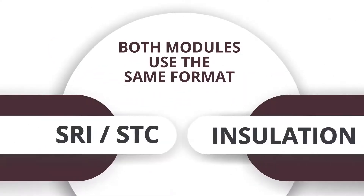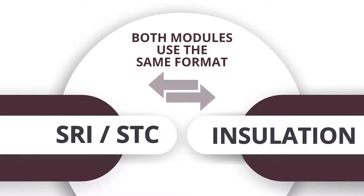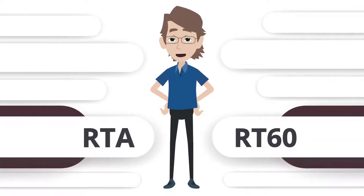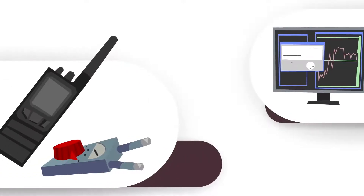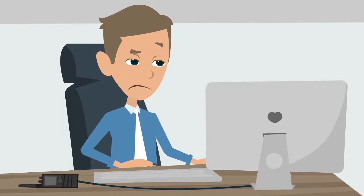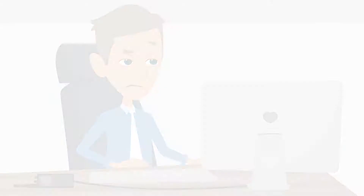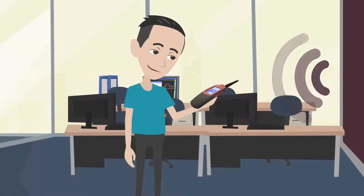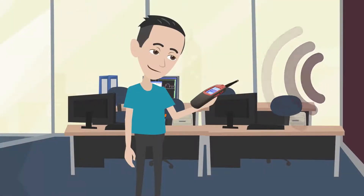Both modules use the same format for storing results, meaning that saved results can be interchanged between both modules. The RTA and RT60 module can be launched from within the building acoustics modules. Where other manufacturers often rely on external PC software that will only get you your final results once you get back to your office, the Bedrock meter will allow you to instantly see your end results on your handheld meter while still in the field.